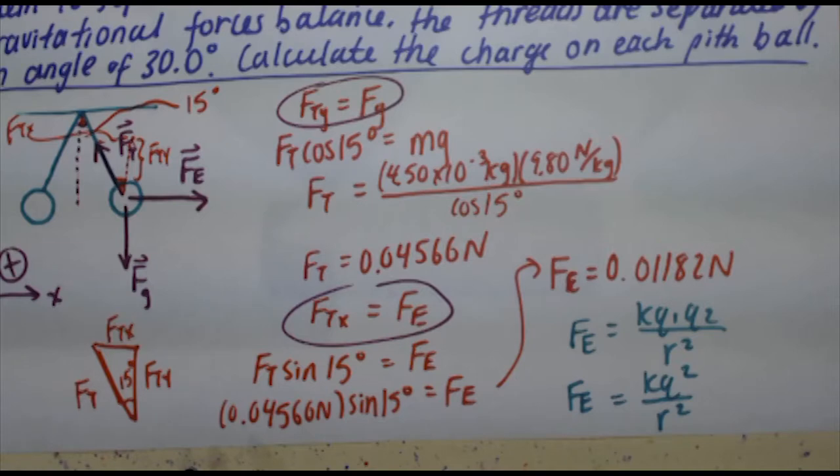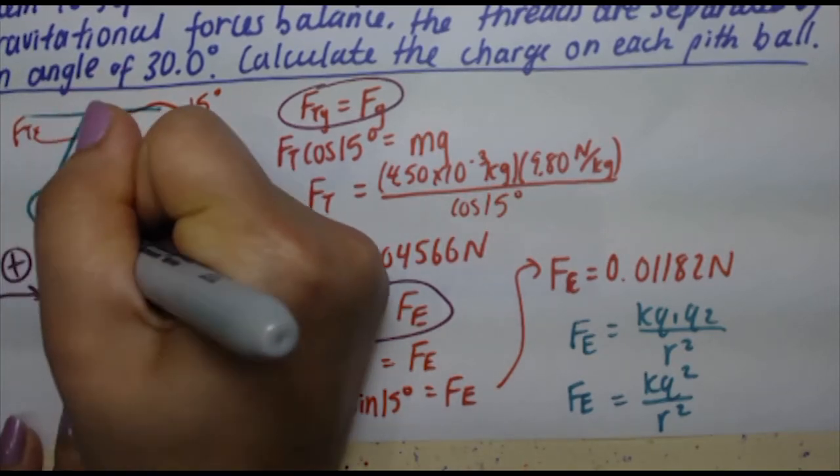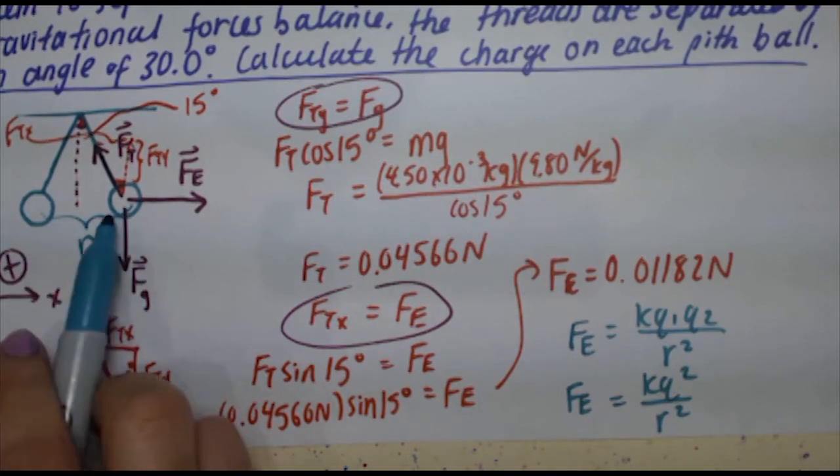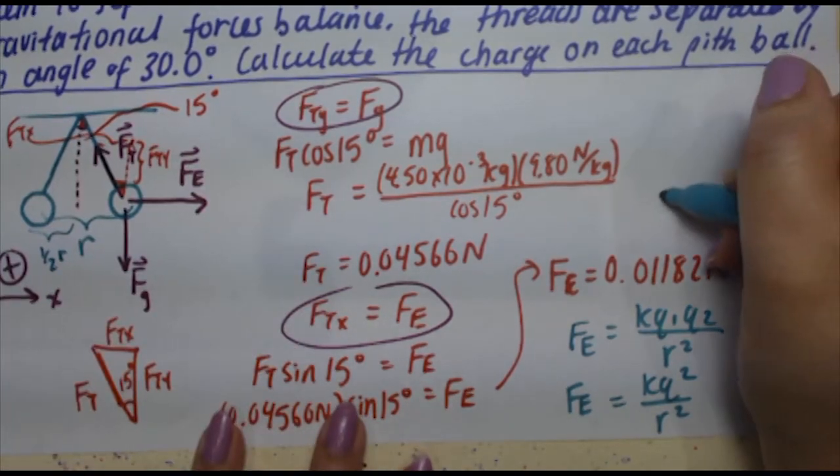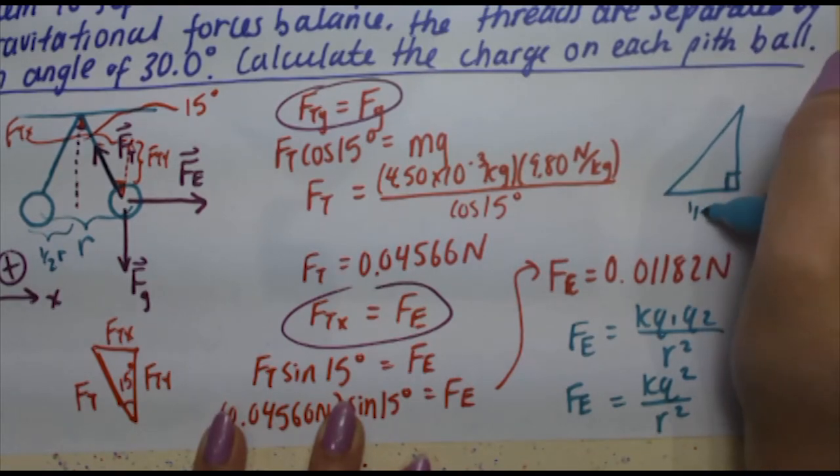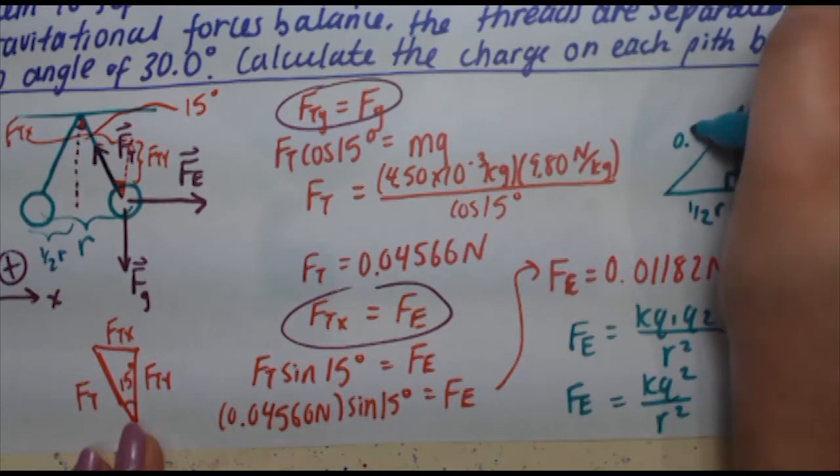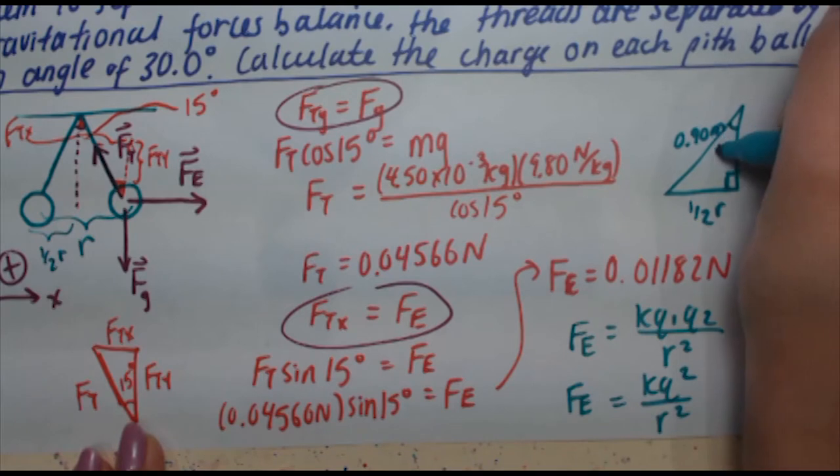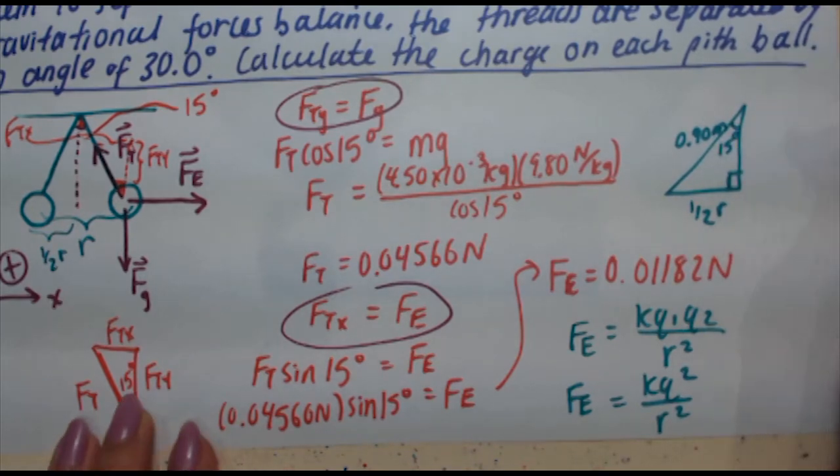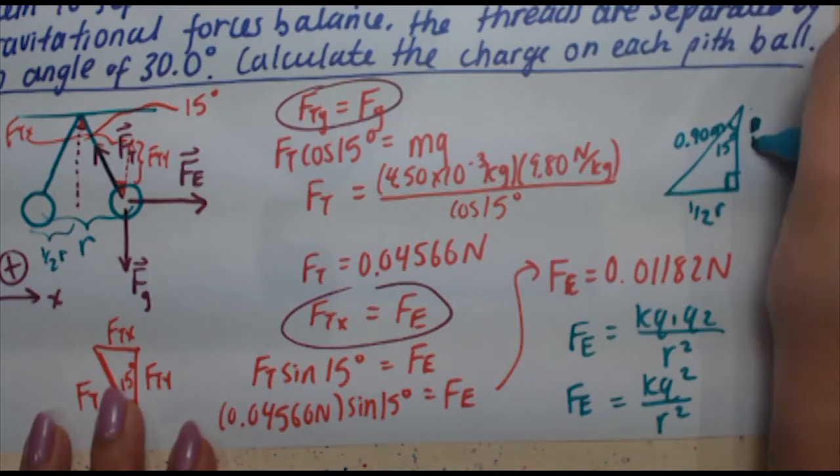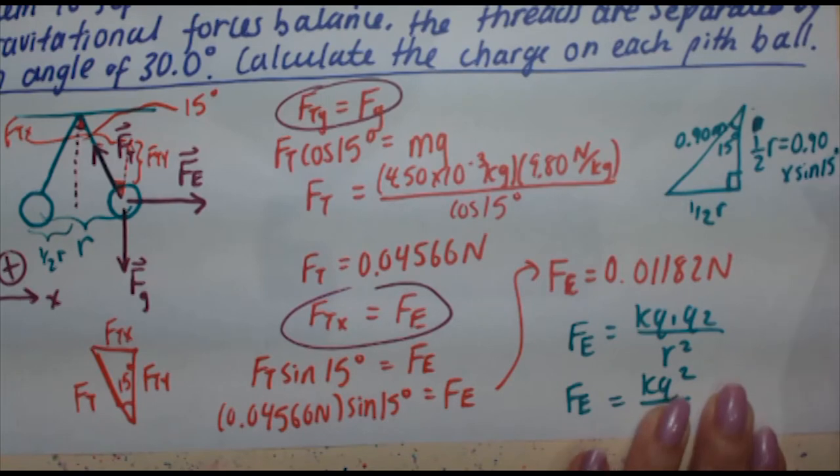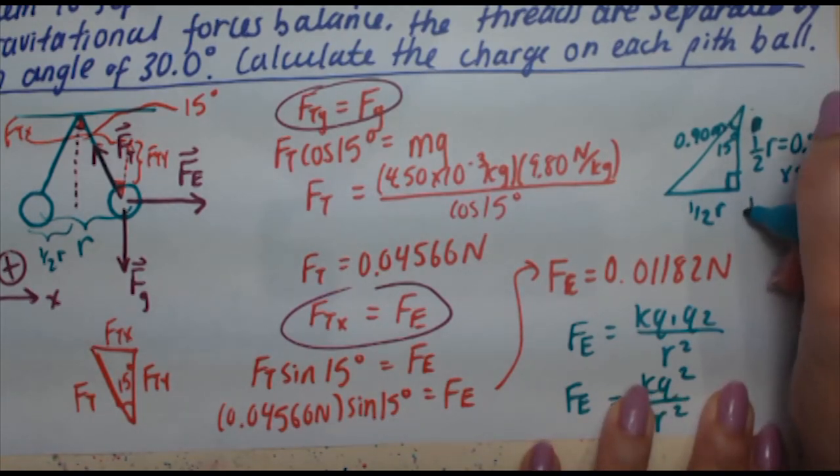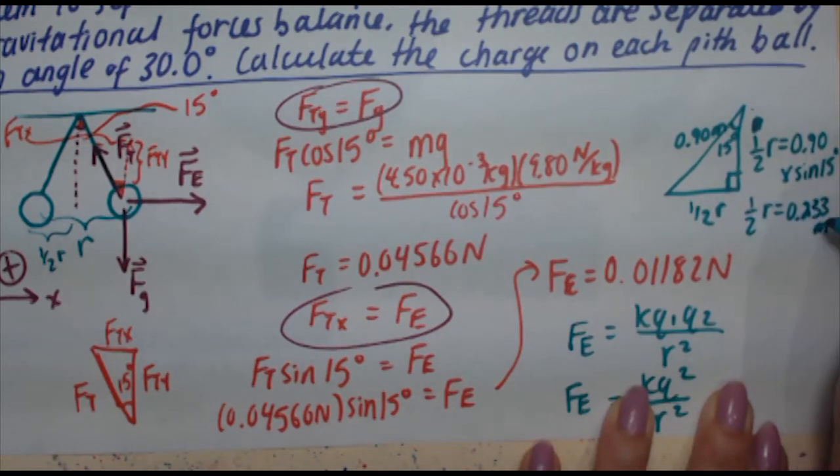In this case, r is going to be this distance right here, the distance between these two charges. You can figure that out by first figuring out what half of r is, because you've got a right angle triangle. If we sketch that out, you've got your right angle. This is half of the distance between the two charges, and you know that the length of the string is 0.90 meters. You know that this angle here is 15 degrees. So according to this, half of r is going to be equal to 0.90 meters times the sine of 15 degrees. When you punch that in your calculator, you're going to get that half of r is equal to 0.233 meters, and therefore r is equal to 0.466 meters. And that's the r we're going to plug into our Coulomb's Law expression.